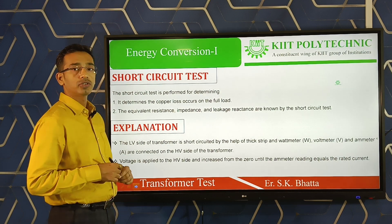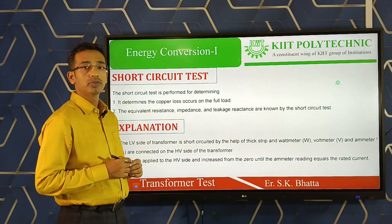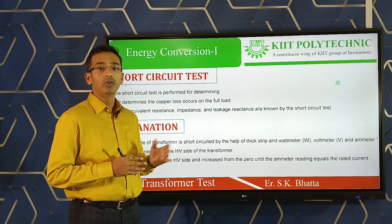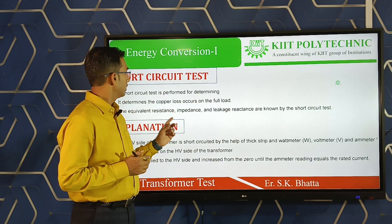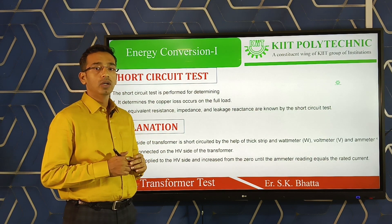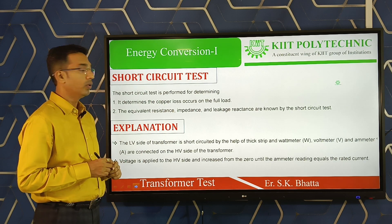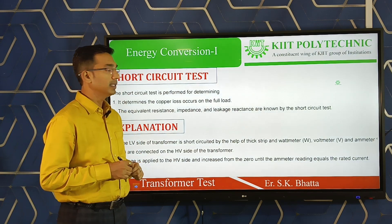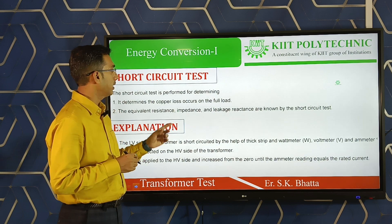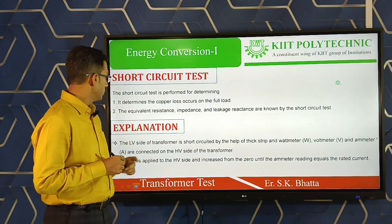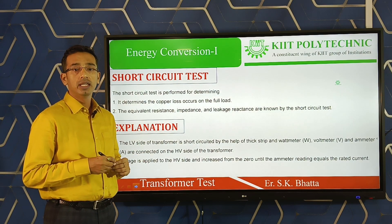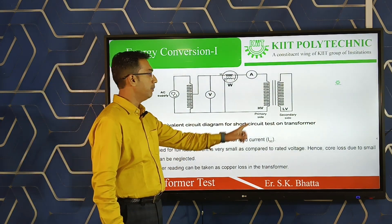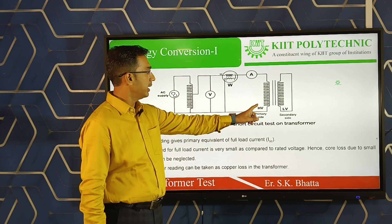Now coming to the short circuit test. The purpose of the short circuit test is to determine the copper loss of the transformer on full load, and also to find the equivalent resistance, impedance, and leakage reactance — the winding parameters. In this test, as the name suggests, the secondary side (LV side) of the transformer is short-circuited through a thick wire.